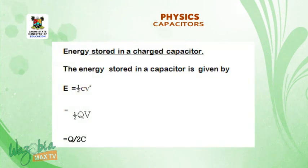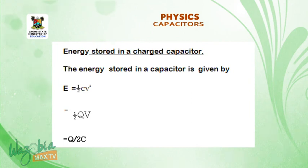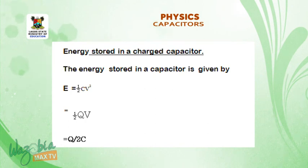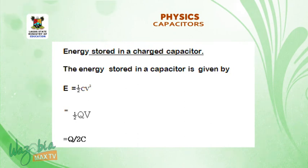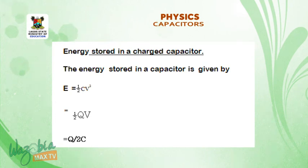Energy stored in a charged capacitor. The energy stored in a charged capacitor is given by E equals one-half CV squared, which is also given by one-half QV, which is also given by Q squared over 2C. We have three formulas to determine the energy stored in a capacitor.